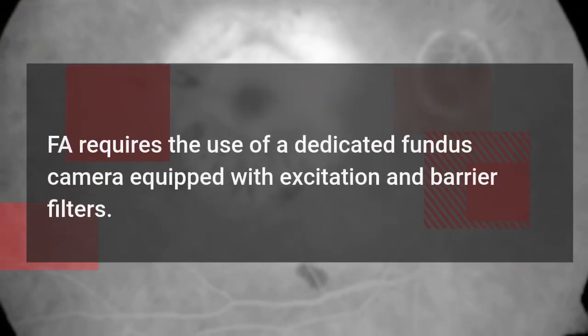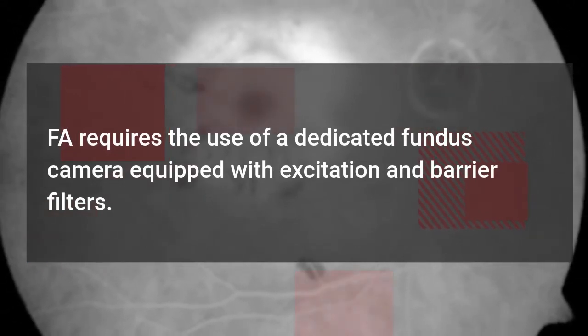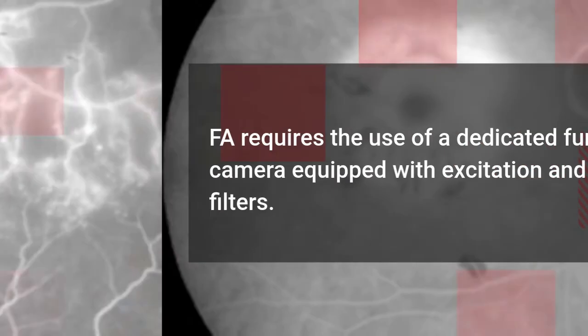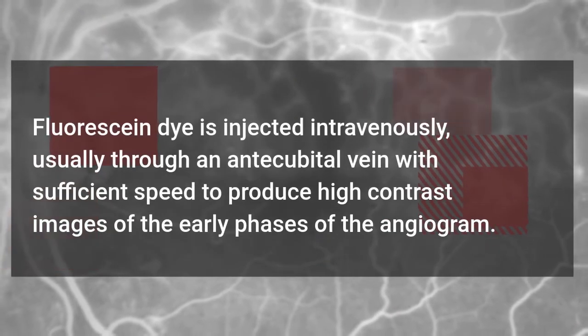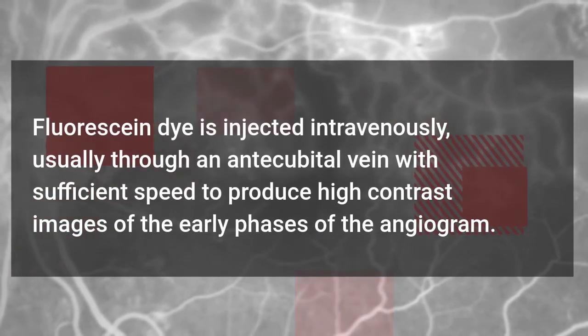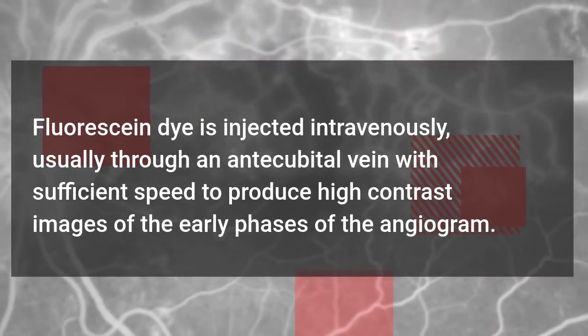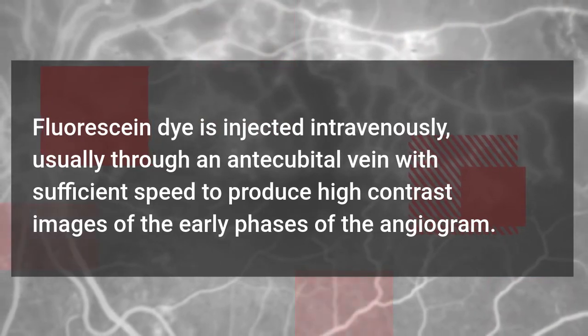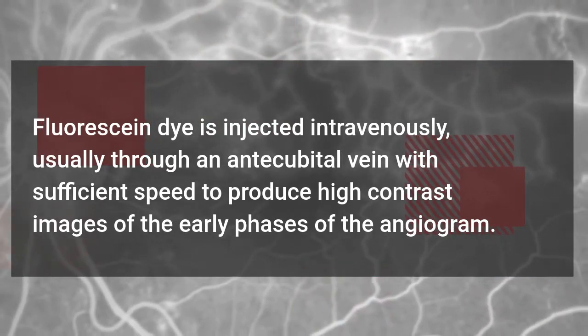FA requires the use of a dedicated fundus camera equipped with excitation and barrier filters. Fluorescent dye is injected intravenously, usually through an antecubital vein with sufficient speed to produce high contrast images of the early phases of the angiogram.